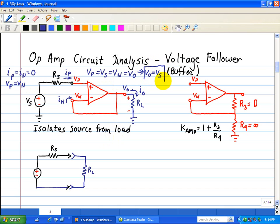Now why is this also called a buffer? Because it isolates the source from the load. What that means is that it doesn't matter what RS and RL values are, we still have this relationship that VO is equal to VS, despite the varying values of RS and RL. This is called a buffer because we can use it in interface circuits to connect a load and the source.